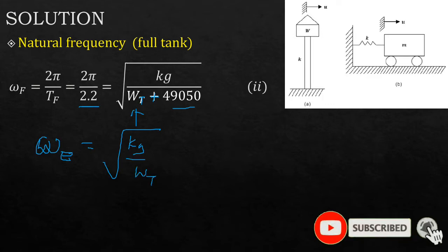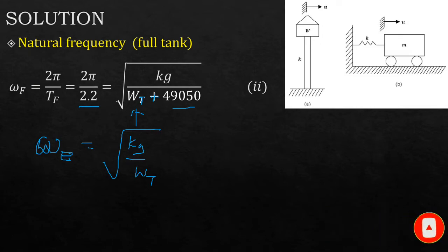So you can see for both equations we have this unknown. So you make kg the subject of formula in equation one and two, and then you equate the two equations. This basically means from equation one, if you make kg the subject, you're going to have kg equals...